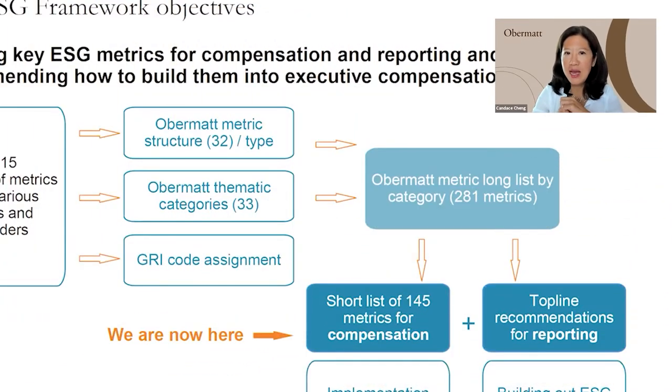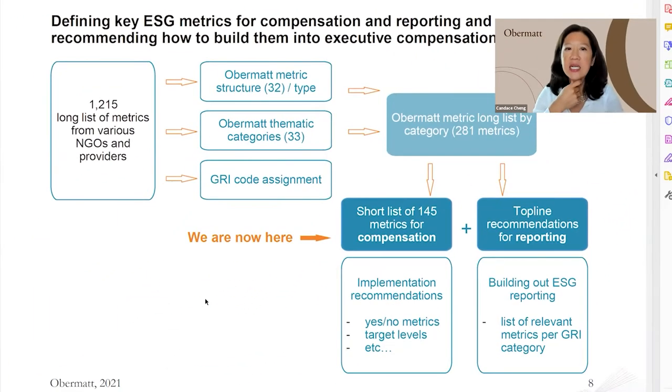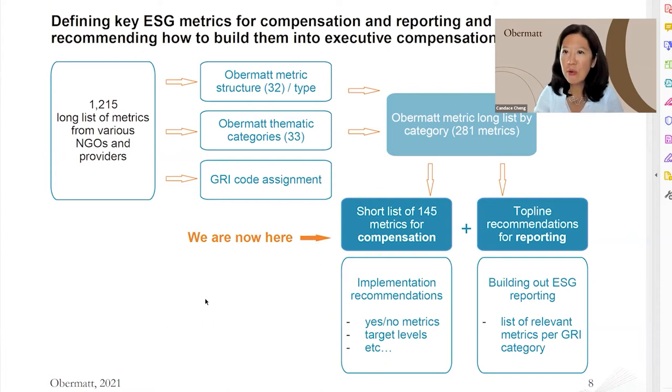The other view we took was to look at the thematic categories. Here we go into ESG — into the environmental metrics — and break them down into things like emissions, energy, resources, etc. We've created 32 to 33 different thematic categories. Around something like emissions there's still quite a range included. We've also assigned the metrics to different GRI codes, so when you have the files you can search for certain GRI codes or focus on a certain metric to ensure it's included in your GRI report.